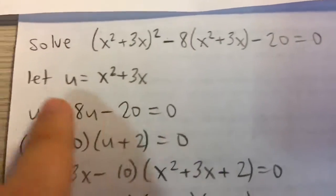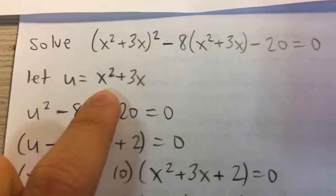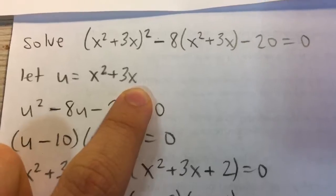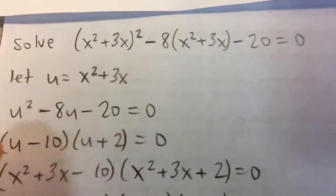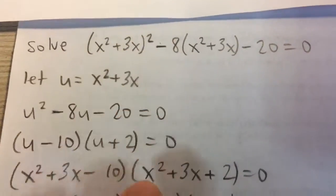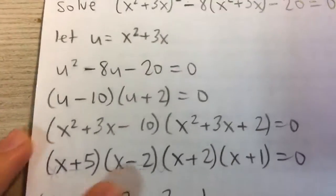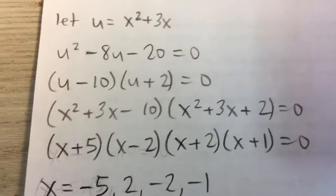What we can do is create a new variable u which is equal to that expression, then substitute in u. So here we have u² - 8u - 20 = 0, and now we have a quadratic equation that we can solve and factor.